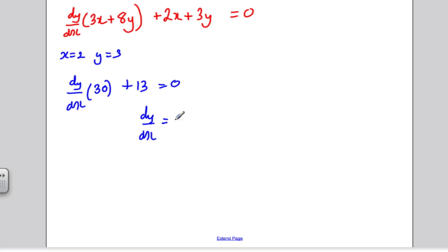So solving for dy/dx, dy/dx is minus 13 over 30, and that is the gradient of the tangent. So the gradient of the normal is minus 1 over the gradient of the tangent, so therefore the gradient of normal is minus 1 over minus 13 over 30, which turns out to be 30 over 13.